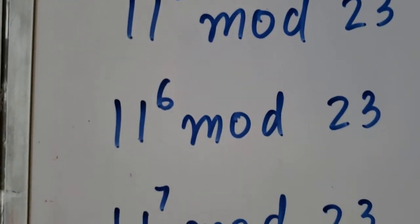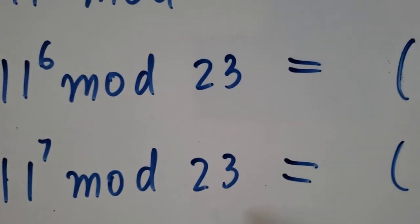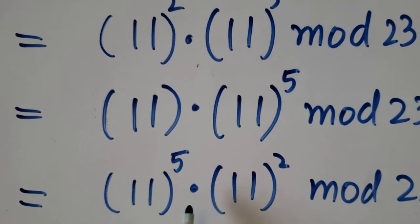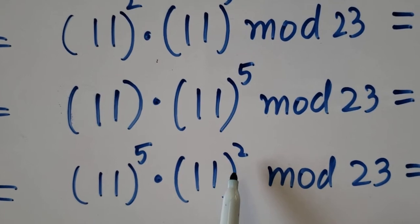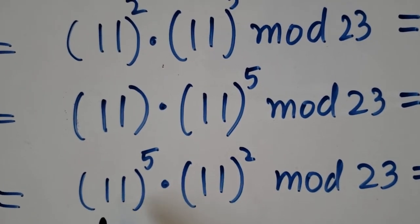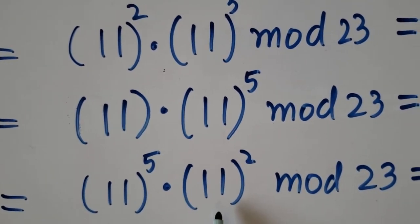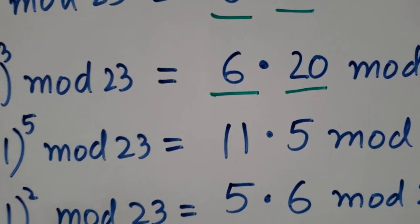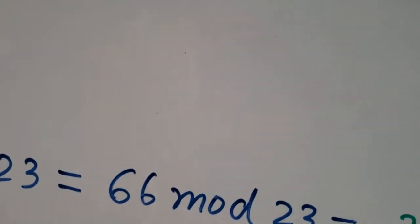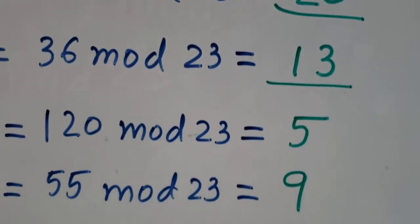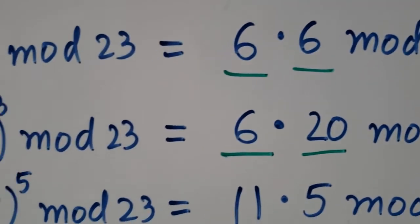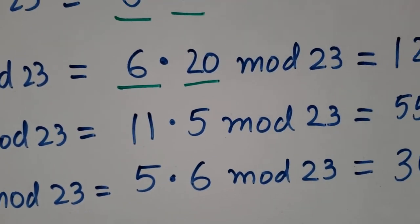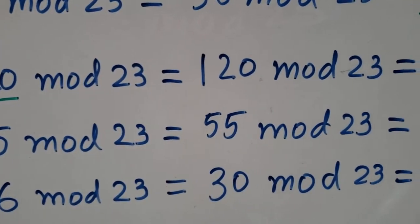Now 11 to the power 7 mod 23. We take the combination of 11 to the power 5 times 11 to the power 2, because 11 to the power 5 is 5 and 11 to the power 2 is 6. Both of these numbers are smaller compared to 20, 13, 9, and 7. The multiplication of 5 and 6 is 30, and 30 mod 23 is 7.